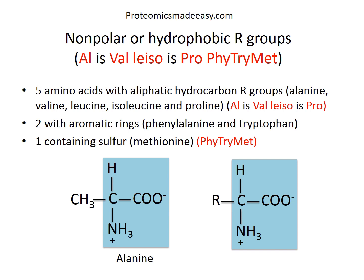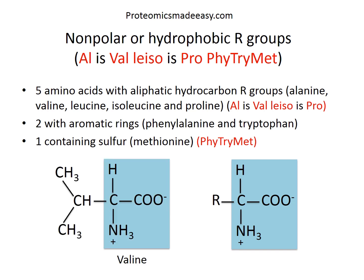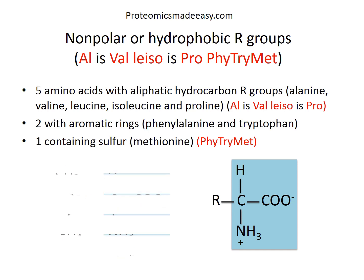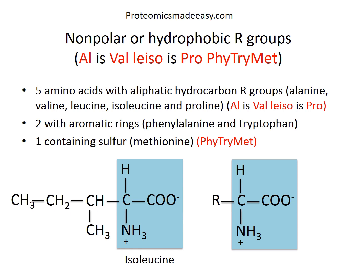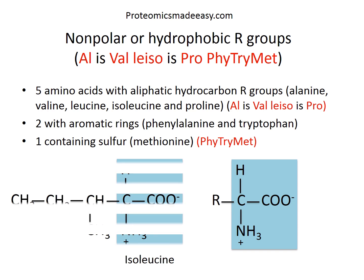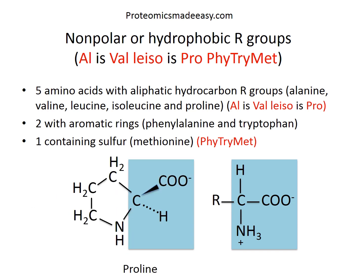If you remember the structure of alanine, it becomes very easy to remember the structure of the rest of the amino acids in that phrase. Valine has two methyl groups connected with a central CH group. Leucine has a similar structure but extended with an additional CH2 group. Isoleucine has the same number of carbon atoms but with the methyl group position changed. And proline, as mentioned, has the R group shared by the amino group.